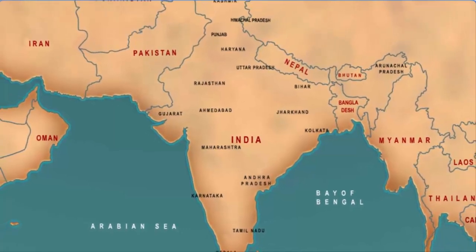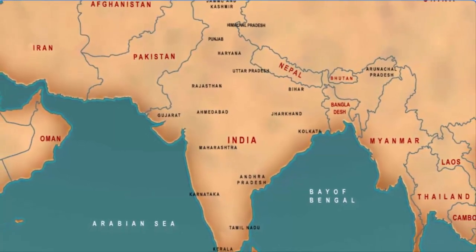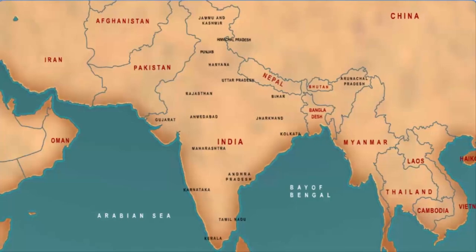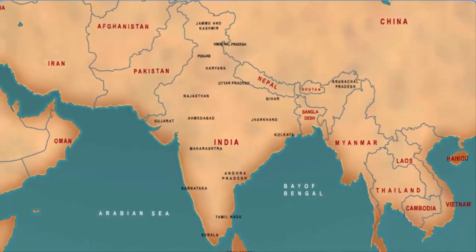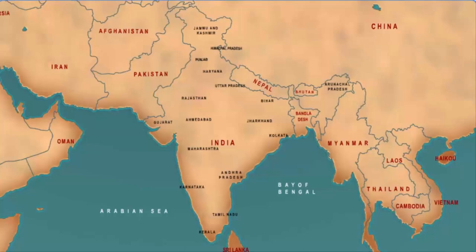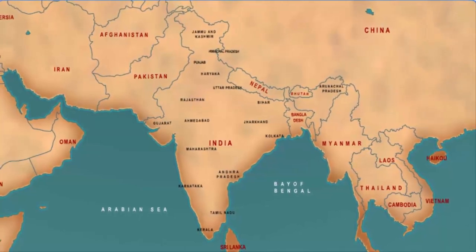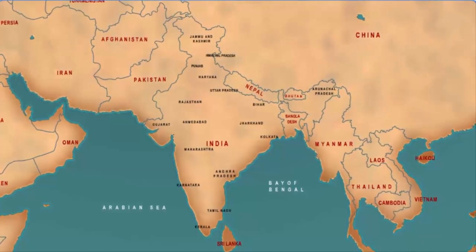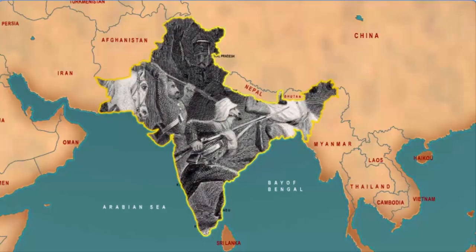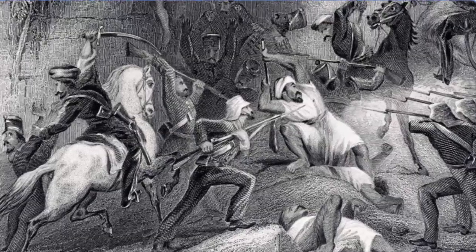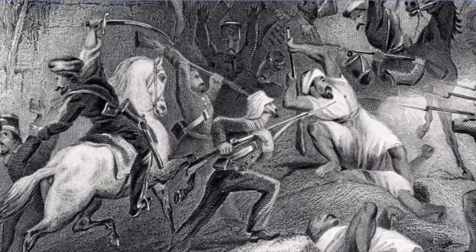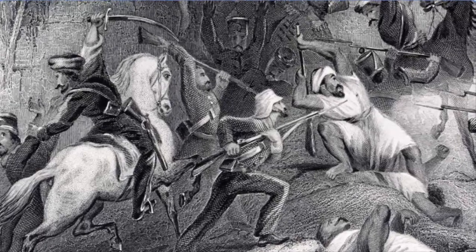The year 1857 holds a significant place in Indian history. It witnessed the first revolt against the mighty British Empire in India. What started as the sepoy mutiny soon spread like wildfire mainly across northern and central India. However, this sporadic revolt failed due to the lack of coordination and planning of the revolutionaries. Nevertheless, technically, the revolt of 1857 remains the first war of Indian independence.